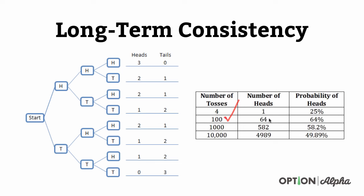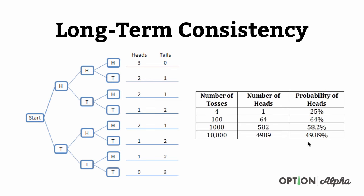After flipping the coin 200 times, we ended up with 64 winning trades — actually better than the 50% expected for heads. After 1,000 rolls, we ended up with 582 — slightly better than expected. Then after 10,000 times flipping, we ended up with 4,989 heads — almost exactly 50%. The reality is that the more you trade, the closer and closer you're going to get to your expected probability, whatever you're targeting.